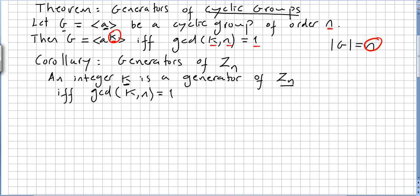I think I proved this theorem in the previous video. So I just want now to show here the corollary. Generators of any group ZN: an integer K is a generator of ZN if and only if the greatest common divisor of K and N is 1. So basically, this is valid for all cyclic groups and this is for all our ZNs. That's the corollary.